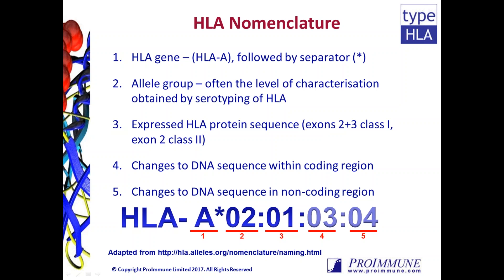The final two sets of digits, shown in paler blue, correspond to changes at the DNA level within the coding region or in the non-coding region of the HLA gene. If two individuals share the same four-digit type but differ after this level, they will be functionally the same, with rare exceptions.